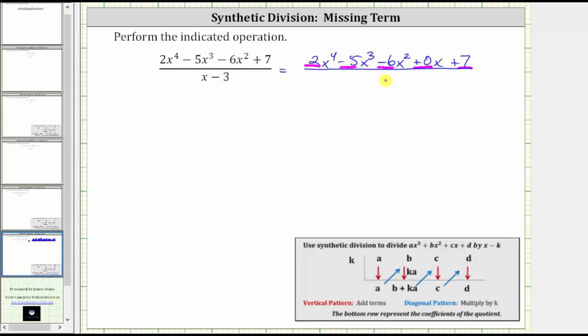Notice the divisor is x minus three. When performing synthetic division, we need the value of k when the divisor is in the form of x minus k. Because we already have subtraction here, to perform synthetic division, k is positive three.